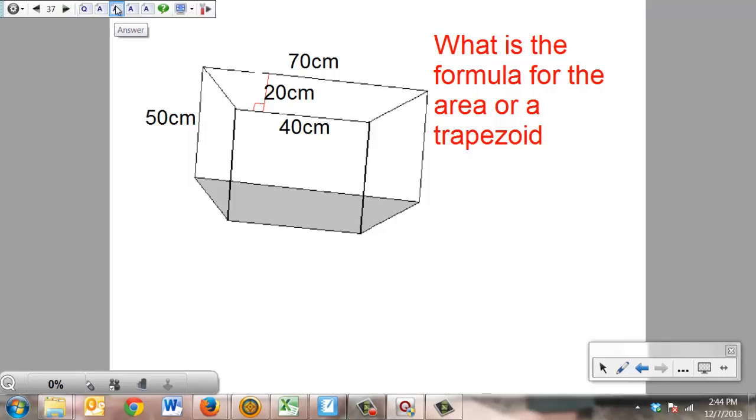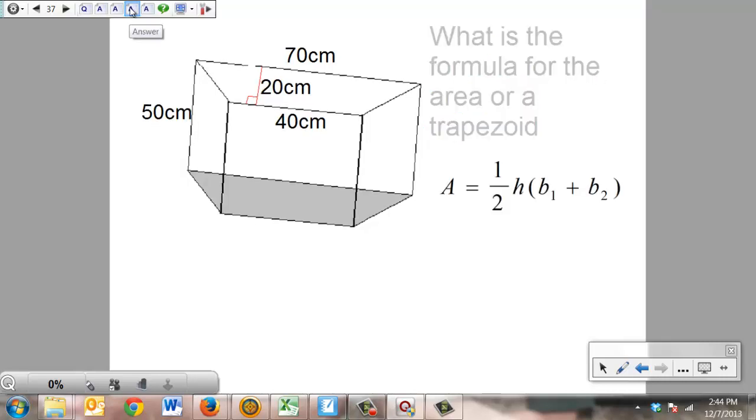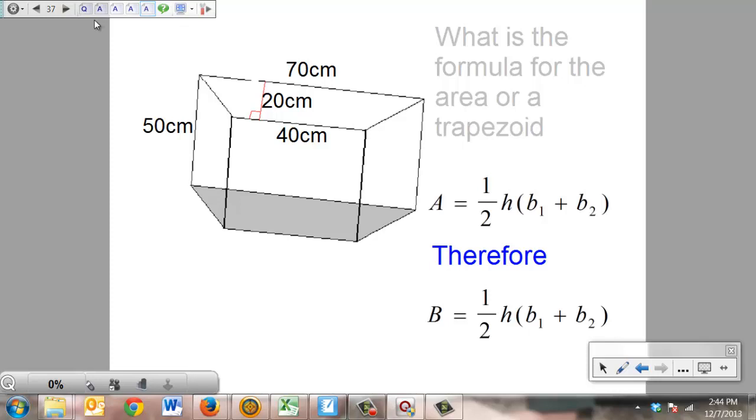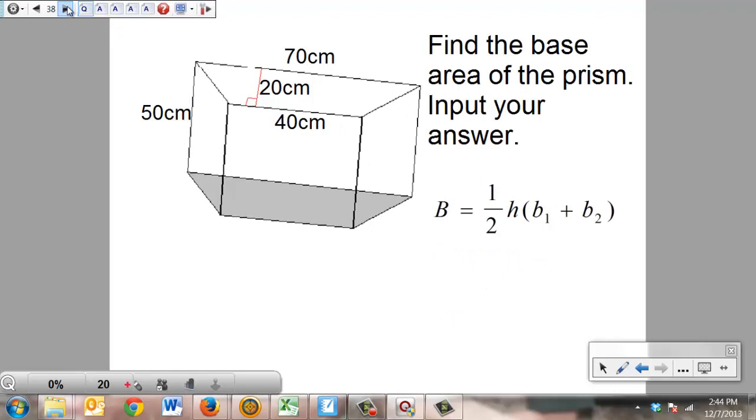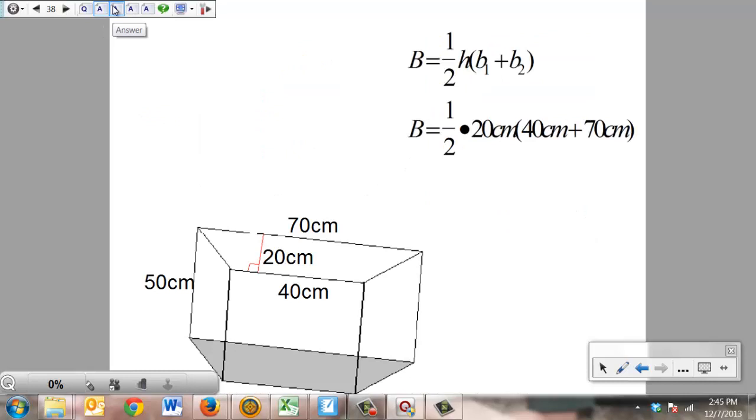That was that tough one we had to learn that said that area is equal to 1 half height times base sub 1 plus base sub 2. Therefore, we can also say our base area is equal to the same formula. From here, we're going to solve for base area. And it gets a little confusing, but not too bad. This height deals with the height of the prism. We don't want that. We want the height that deals with the distance between the parallel lines, which is 20 centimeters. Base 1 and base 2 are going to be your 70 and your 40 centimeters.